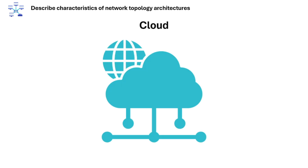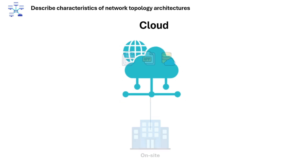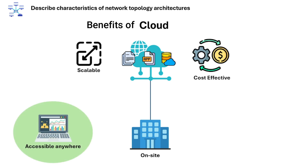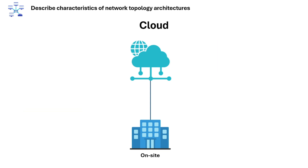Then we have the cloud. Cloud is infrastructure, platforms, or software hosted off-site and accessed via the internet. The benefits of using cloud include scalability, cost-effectiveness, and accessibility from anywhere. An example of cloud services is using Microsoft 365 for email and collaboration instead of running your own Exchange server.